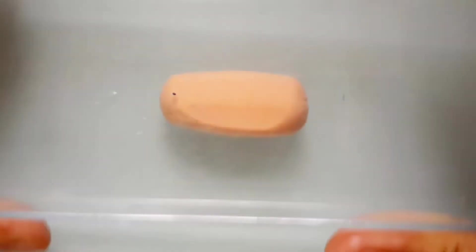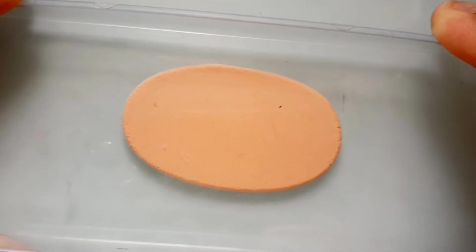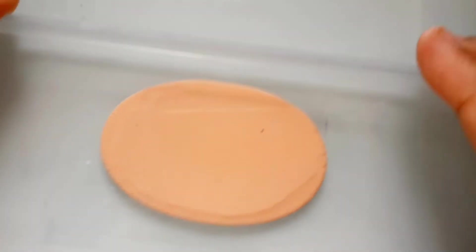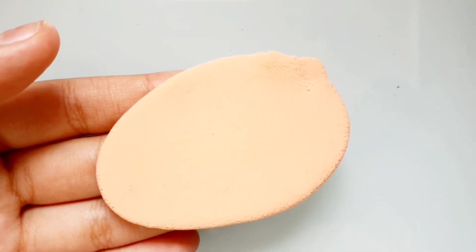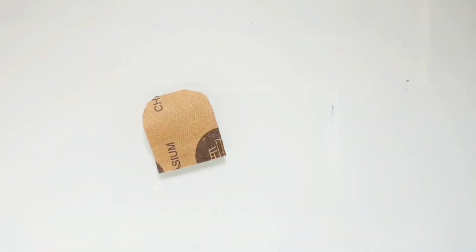For that we need skin color clay and we're going to make it into a flat shape. Make sure it is even. Now we're going to put it in the freezer for about ten to twenty minutes.